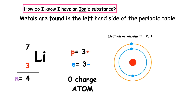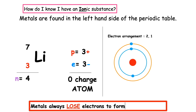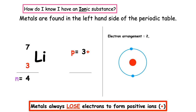Metals will always lose outer electrons to form positive ions. It wants to have the electron arrangement 2. As a result the number of electrons change — we now have 2 electrons. 3 positive plus 2 negative gives an overall charge of positive. This means that metal atoms prefer to sit as metal ions.